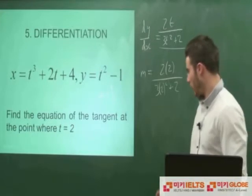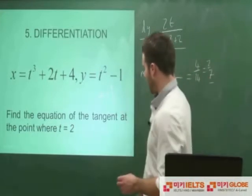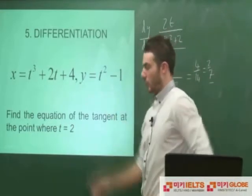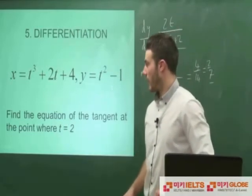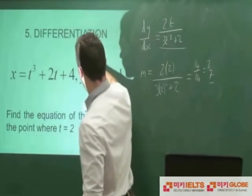So where t equals 2, the next thing that we need are some x and y coordinates so that we can use our equation, if you remember, from C1.